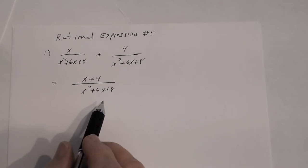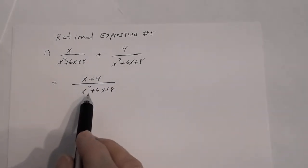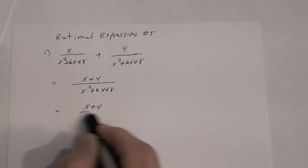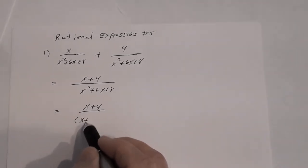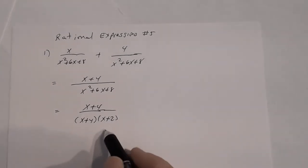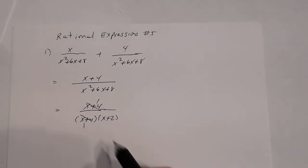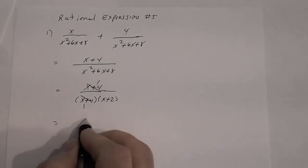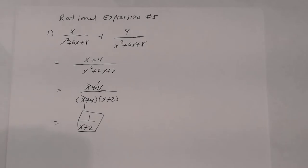Remember, you need to make sure that you've simplified this rational expression. So we need to factor. The numerator I cannot factor, but if you look at the denominator, I can factor this as x plus 4 times x plus 2. Now you reduce any common factors — you must show those factors that are being reduced. So the answer is 1 divided by x plus 2.